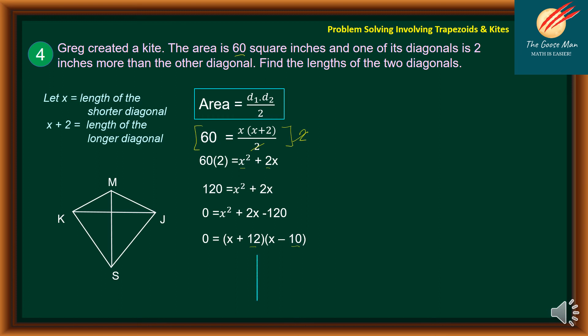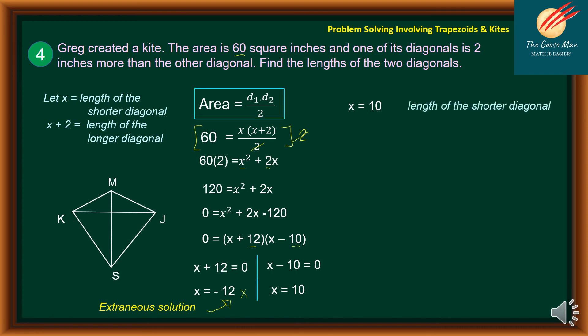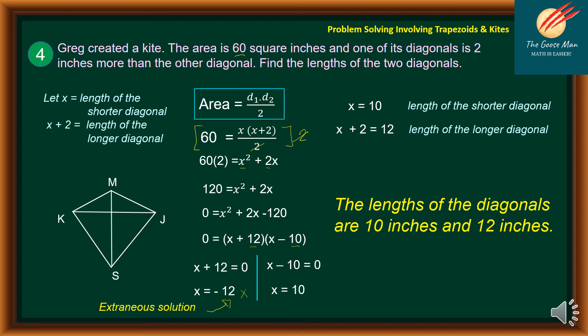Using the zero product property, X plus 12 equals 0 gives X equal to negative 12. However, this is an extraneous solution because there is no negative length, so we cross it out. On the other hand, X minus 10 equals 0, so X is equal to 10. From our representation, X is the length of the shorter diagonal. For X plus 2, that is 10 plus 2 is equal to 12. This is the length of the longer diagonal. Therefore, the lengths of the diagonals are 10 inches and 12 inches.